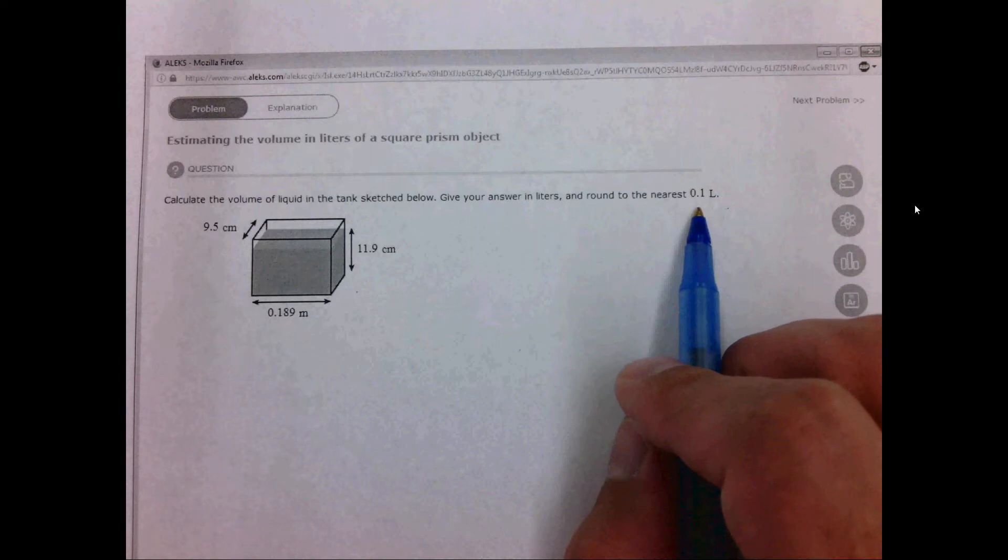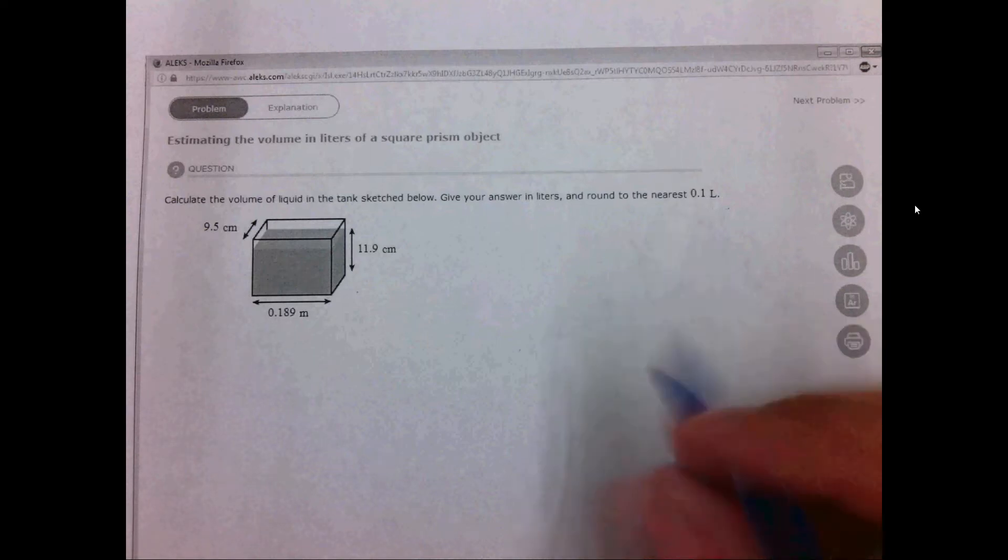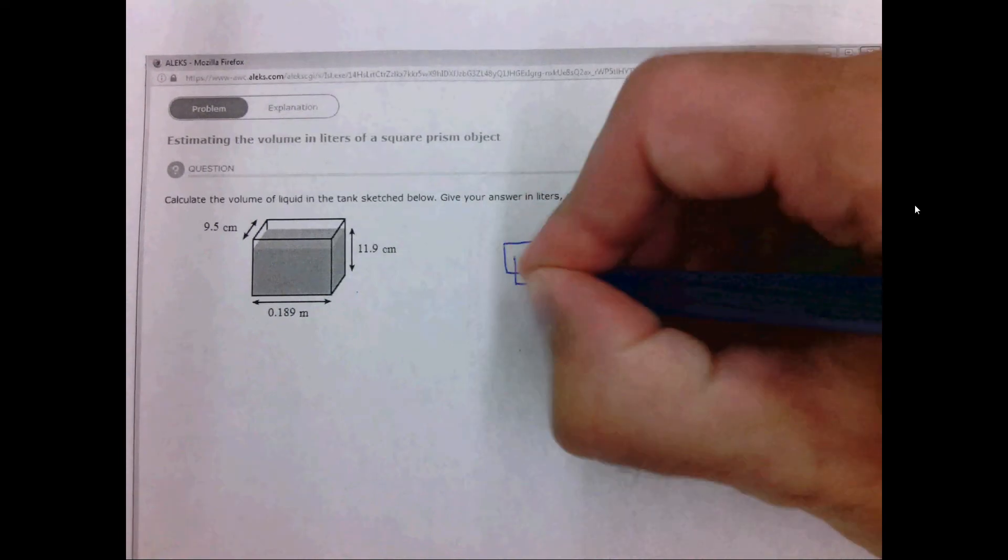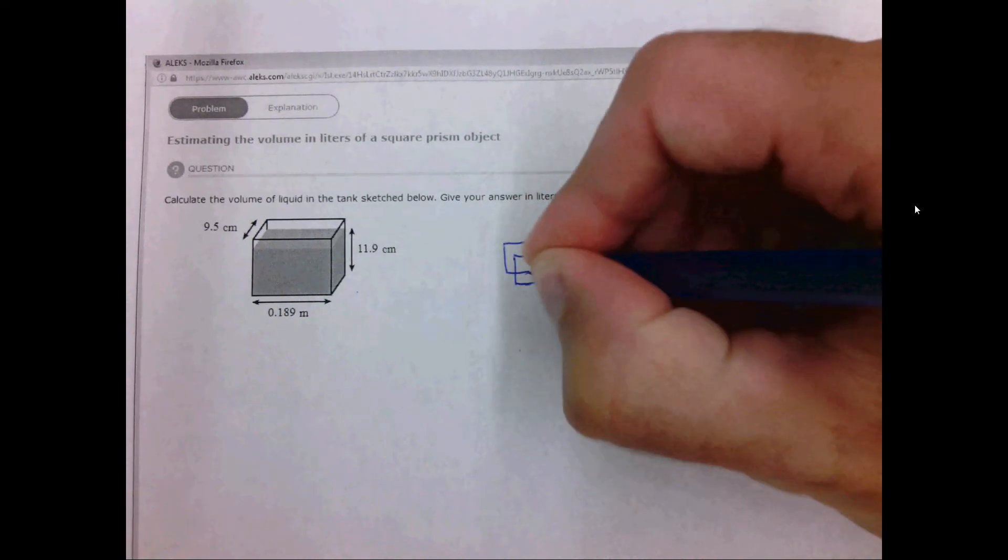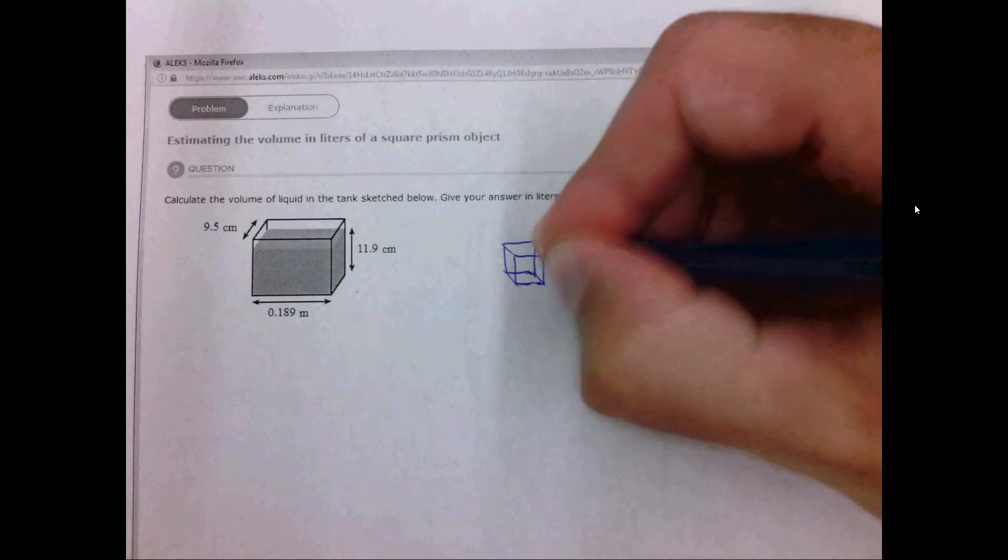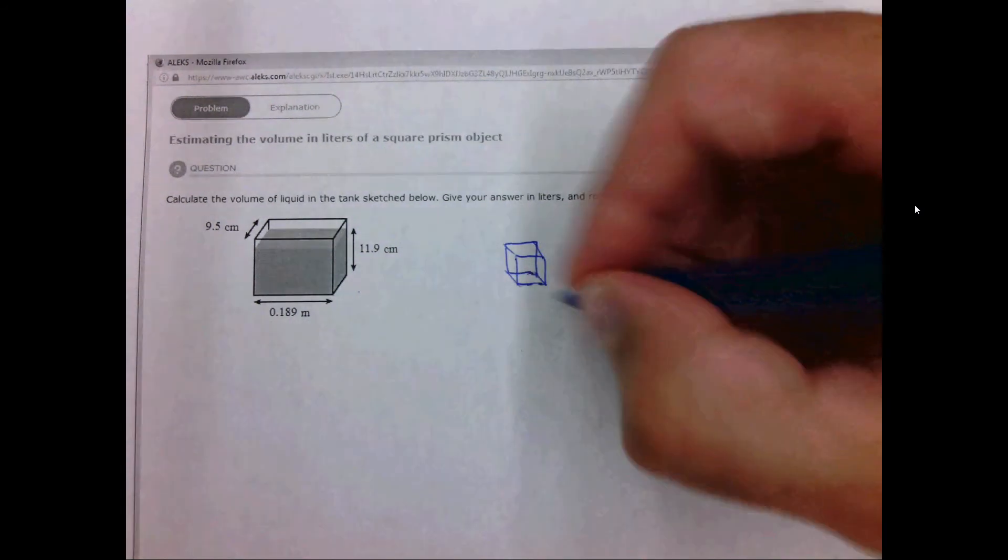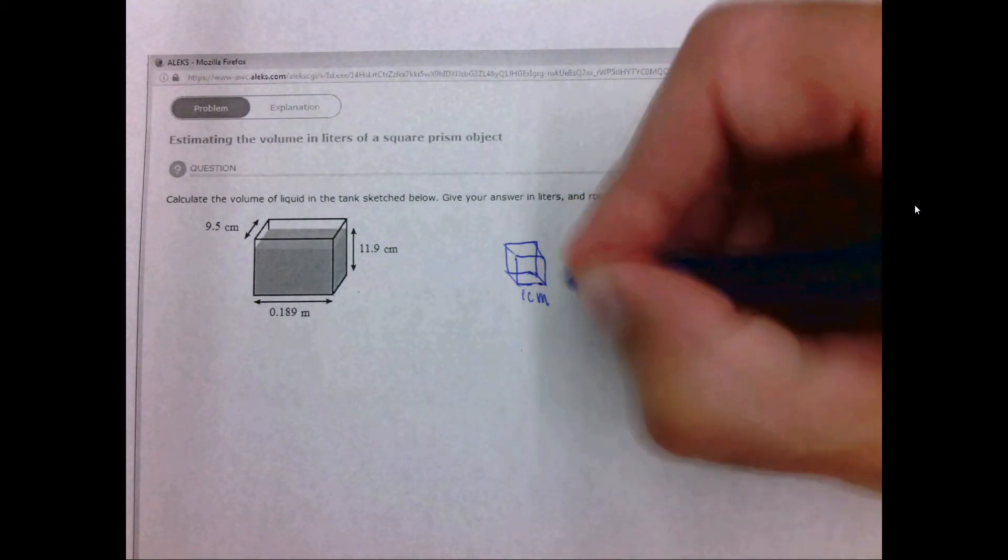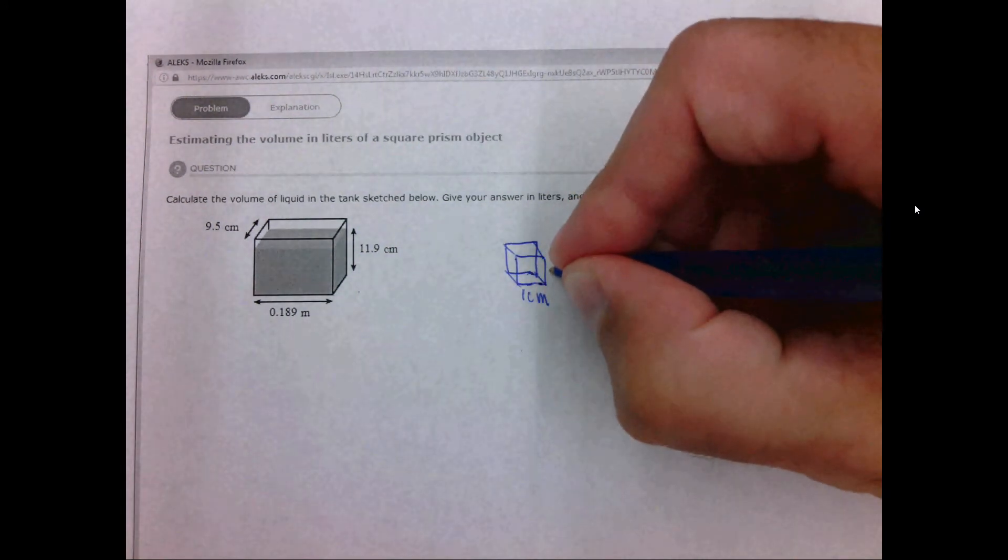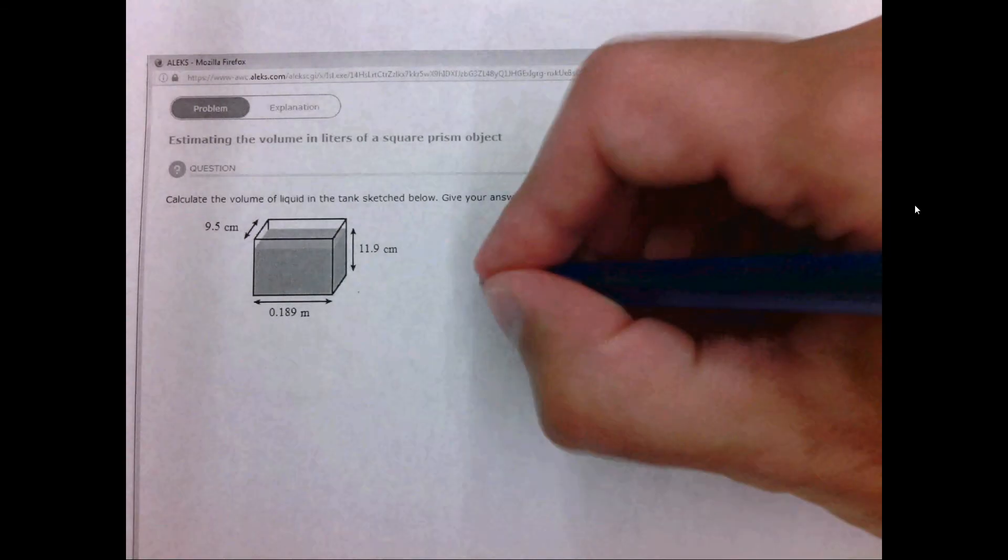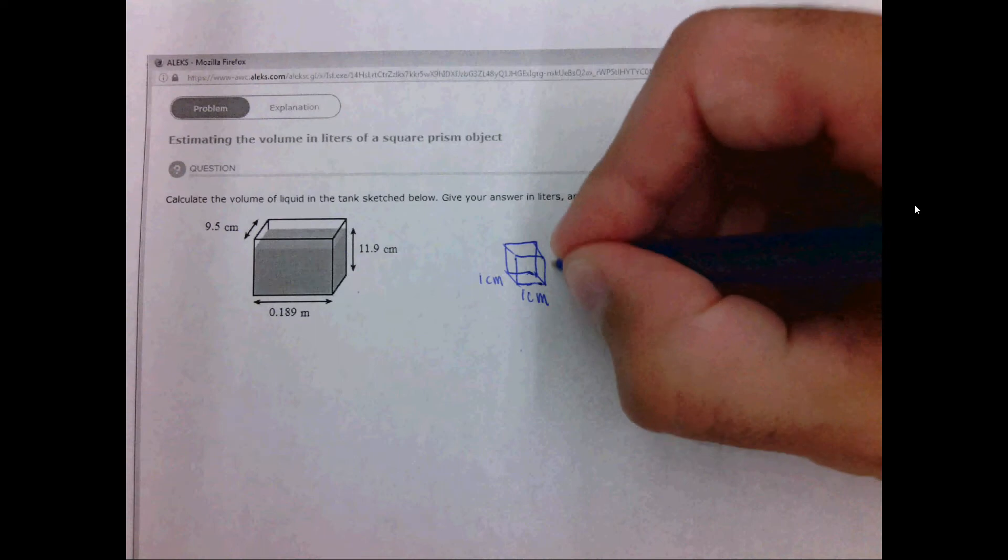One thing that we need to be aware of is that a three-dimensional distance has length, width, and height. In this case, the length of this is designed to be one centimeter, the width of it is one centimeter, and the height of it is one centimeter.